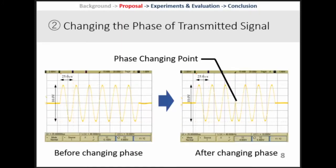The second proposal is about improving the resistance to disturbance. We can improve resistance to disturbance if the cross-correlation waveforms have complexity. In the existing method, using a chirp signal makes it possible to increase waveform complexity. But COTS transducers cannot generate a chirp signal, so we change the transmitted signal phase to increase waveform complexity. This figure shows what the phase changing of the transmitted signal is — you can observe a phase-changing point in the middle of the right-figure waveform.